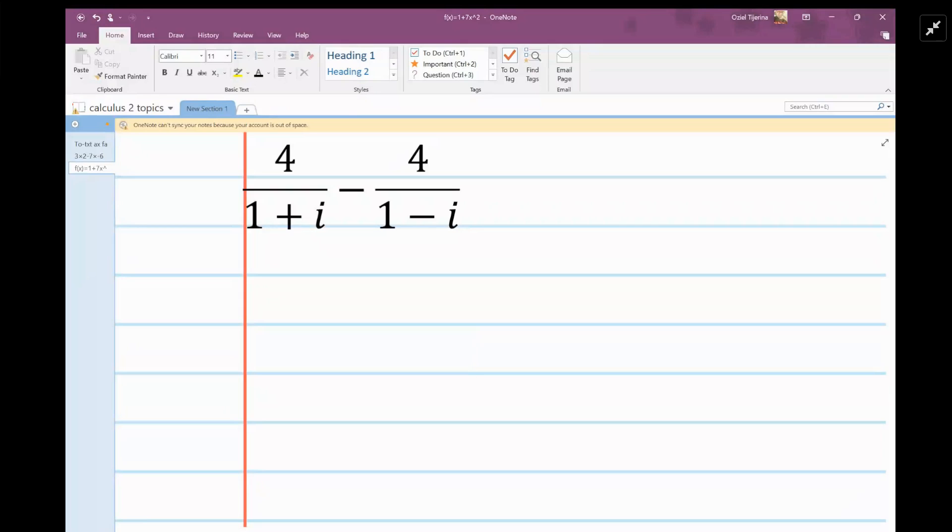The way that I like to do these problems is by cross multiplication. a over b plus or minus c over d is equal to ad plus or minus bc over bd. Basically what you're going to do is multiply these two.